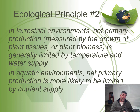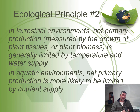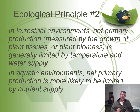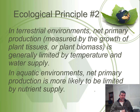Ecological principle number two: in terrestrial environments, net primary production — NPP — is regarded as plant biomass, the total amount of matter locked up within plant tissue. Generally, in a terrestrial environment, the limiting factors are temperature and water supply. If temperature gets too high or water availability gets too low, plants will dry out. They may use strategies to keep cool, which can involve using water, further limiting water supply. Temperature and water are key limiting factors in terrestrial environments.